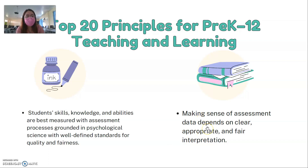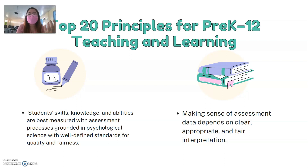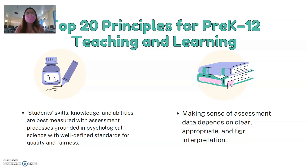Making sense of assessment data depends on clear, appropriate, and fair interpretation. After conducting our assessment, we gather the data and raw scores. Who among our students got high scores? Who got low scores? In what specific part of the lesson did they score the least? With that, this will eventually help us as teachers realize whether the strategy we used in teaching was effective or not. If it's not effective, we need to utilize another strategy. The data we got serves as feedback for us teachers on whether we have utilized the correct strategies.